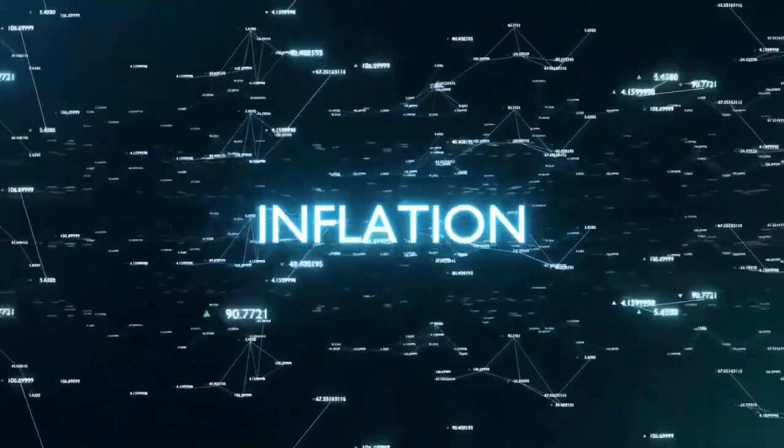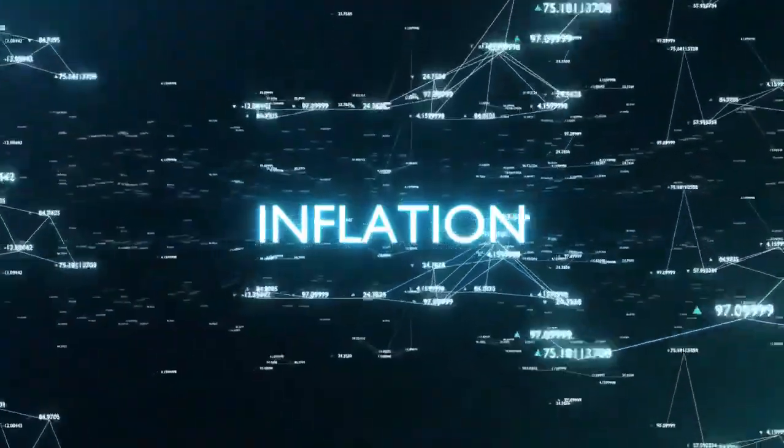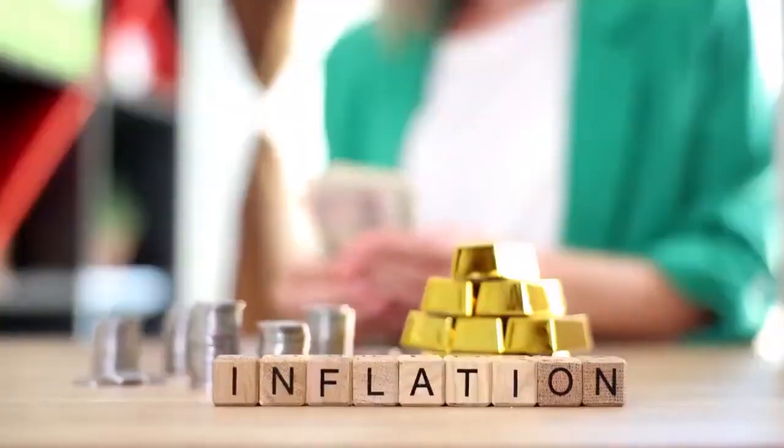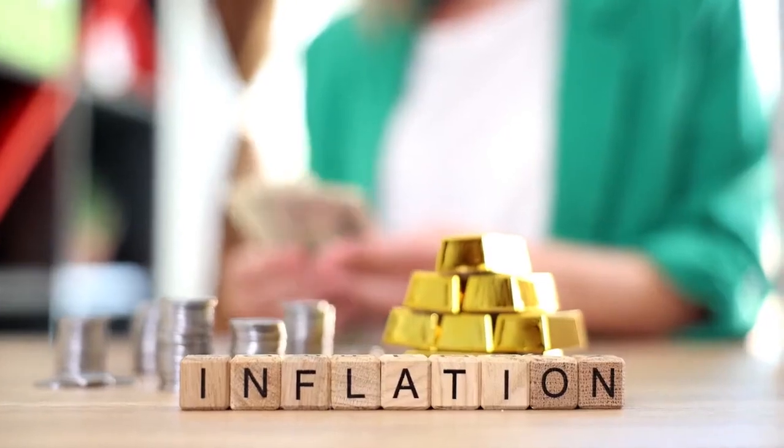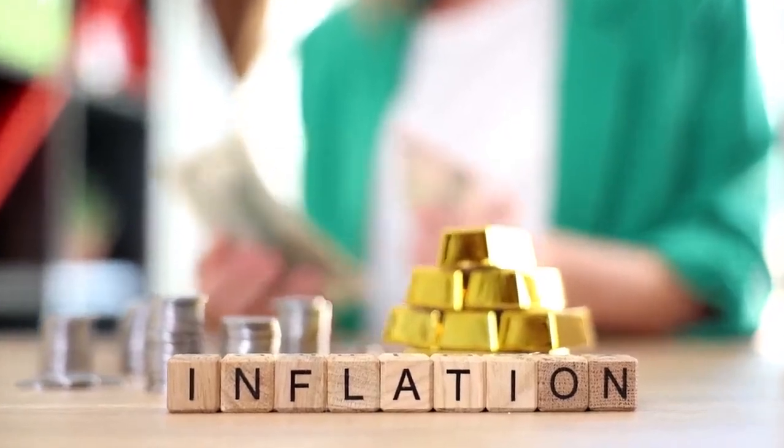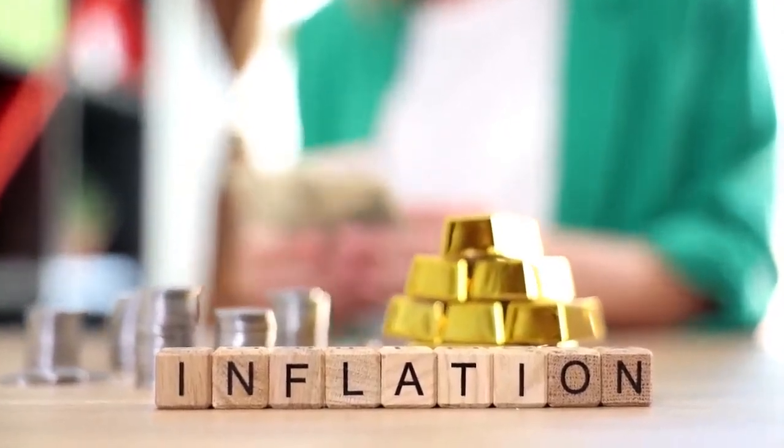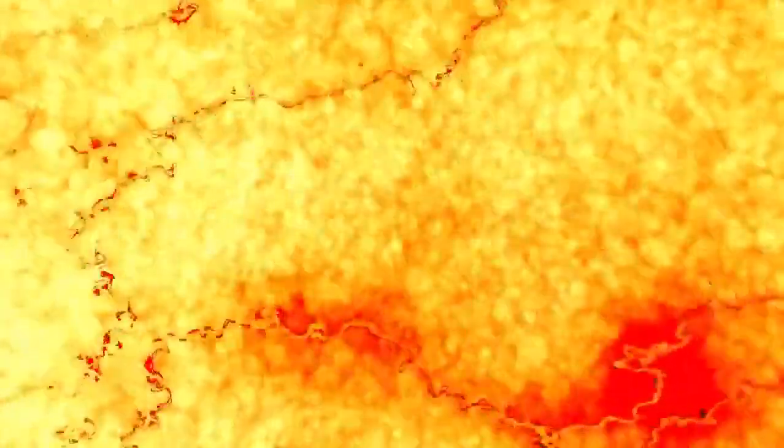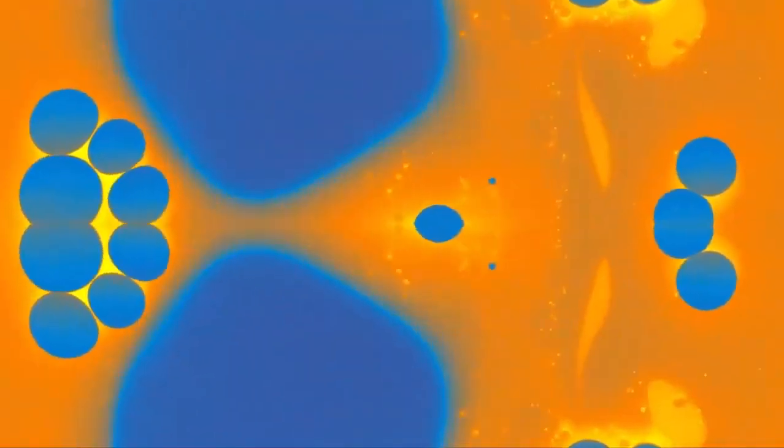At times, quantum fluctuations akin to those shaping the universe's structure cause certain areas where inflation ceases, resulting in a hot Big Bang. However, these regions are far fewer compared to those where inflation persists indefinitely. Notably, no two separate regions with Big Bangs will ever overlap because the expanding universe drives them apart.